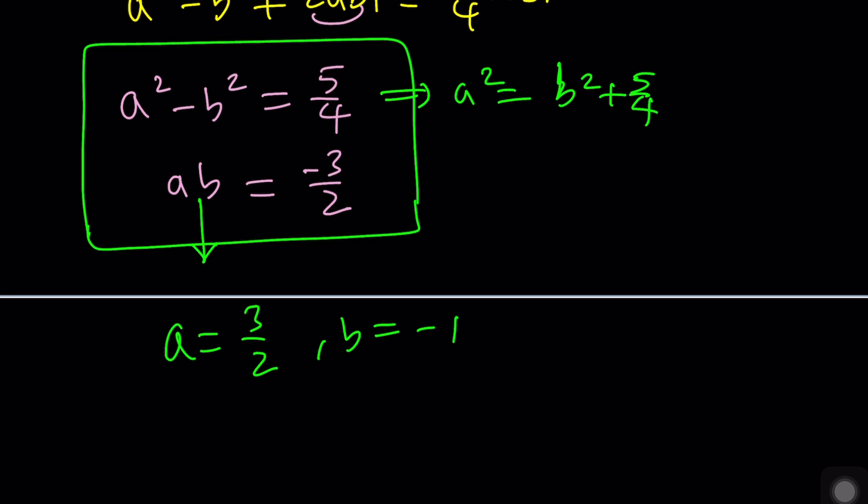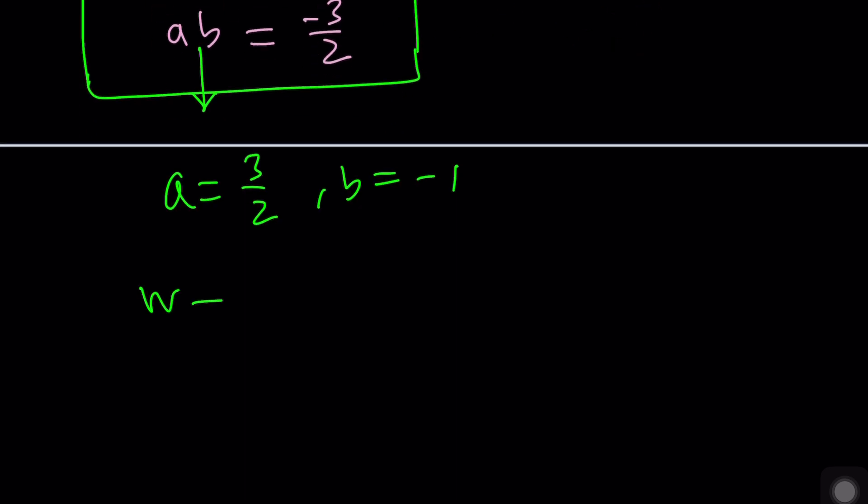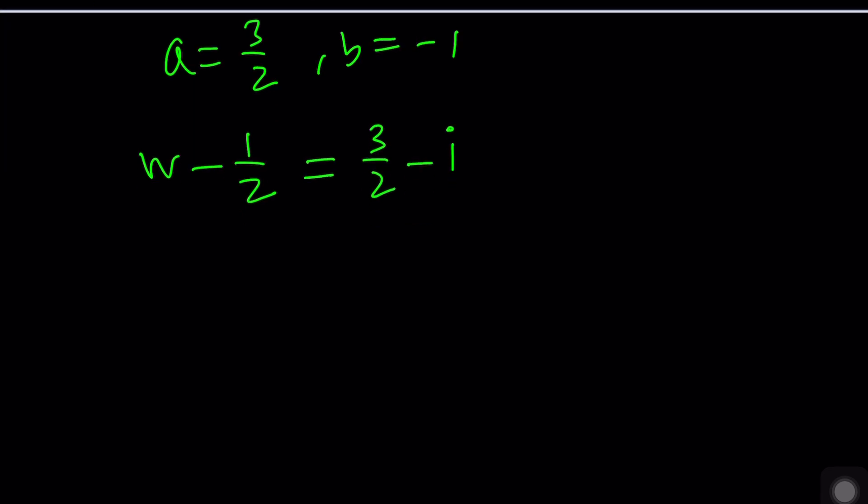So this means w minus one half is, remember this was equal to a plus b i, so three halves minus i. But the opposite of this number when squared also gives us the same result. So you go with the plus minus which gives you negative three halves plus i. From the first one we get w equals two minus i. From the second one we get w equals negative one plus i.